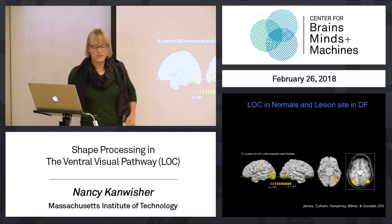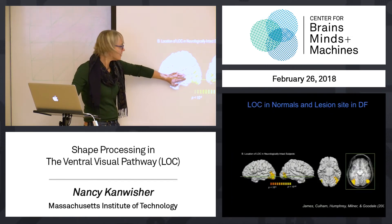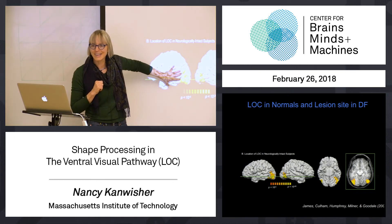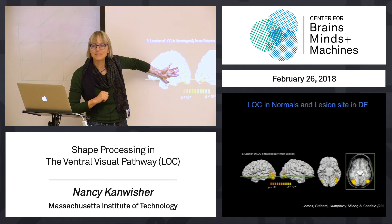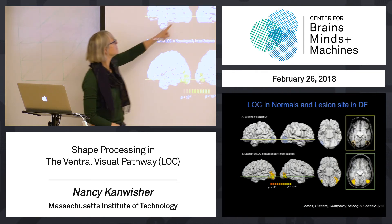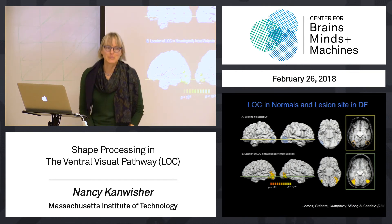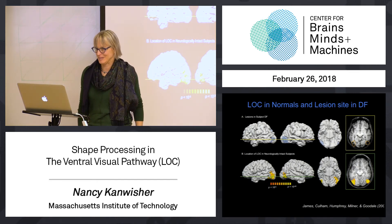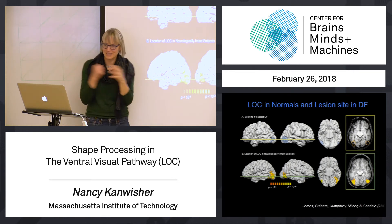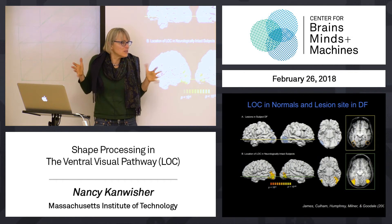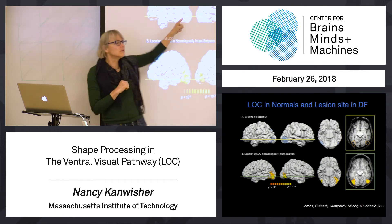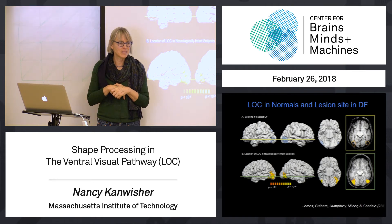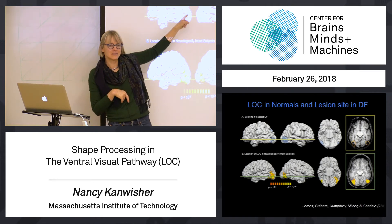Here's a depiction of LO from another study on normal subjects. Now, where exactly is Patient DF's lesion? Her lesion is right in that same zone — really similar to the LO region. This tells us that the region responds to shapes more than visual garbage, and if you lose that region, your conscious shape perception is really messed up. So LO is not only activated by shapes, but necessary for shape perception.